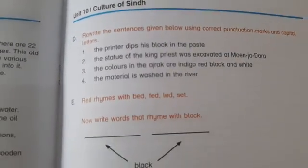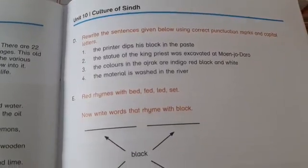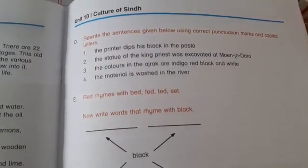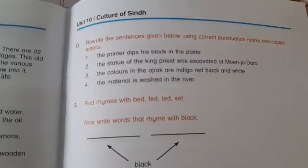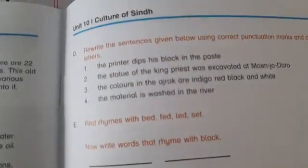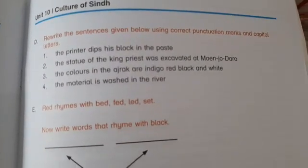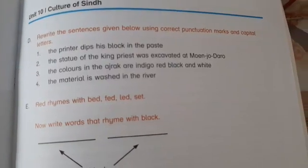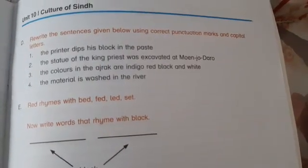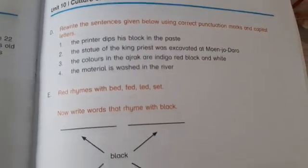Exercise D. You know what the question is? When you have homework, first of all you have to write the unit number 10, then exercise D, page number 69. Then the question is: rewrite the sentences given below using correct punctuation marks and capital letters. Now here are four sentences given below.